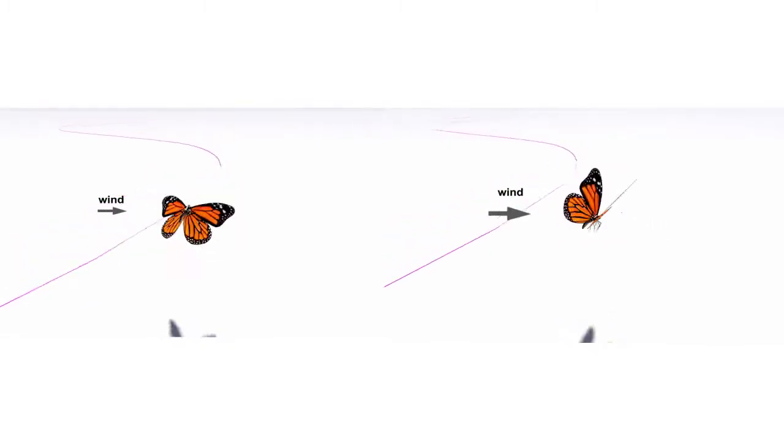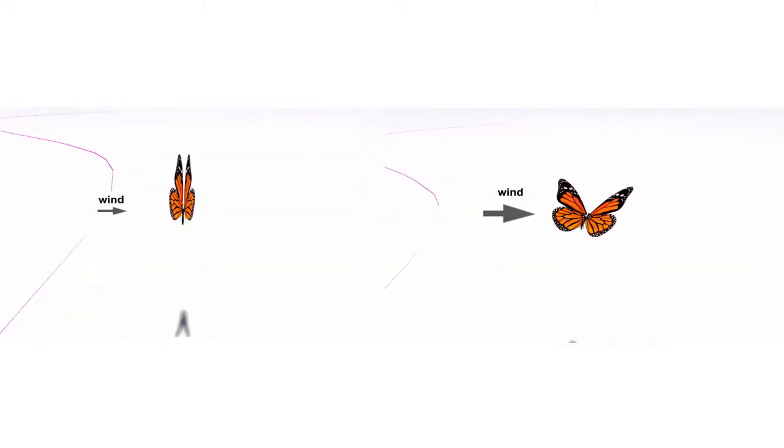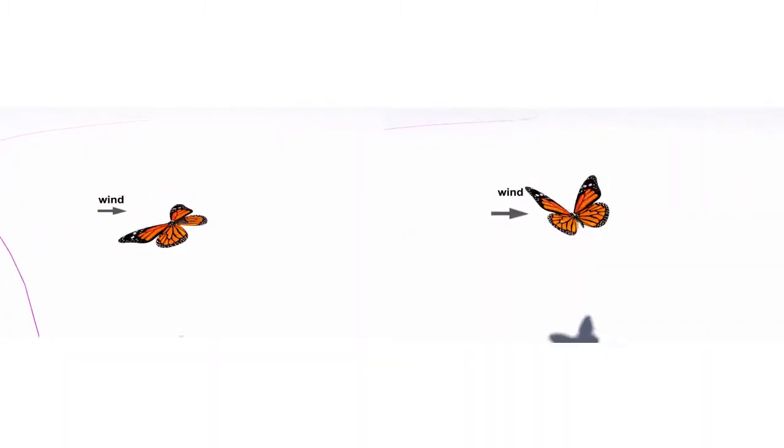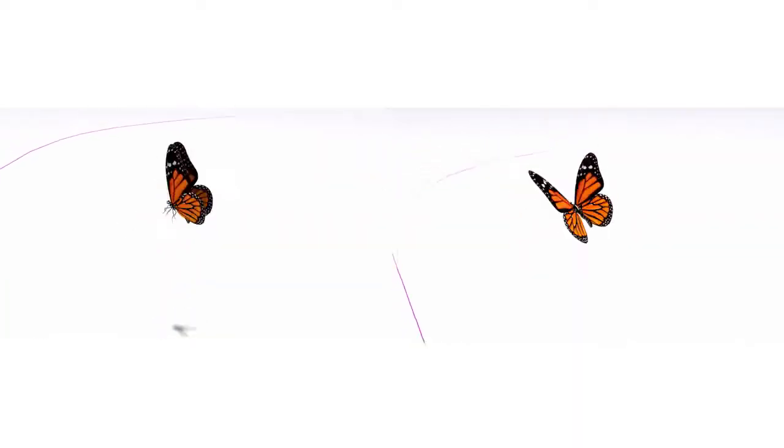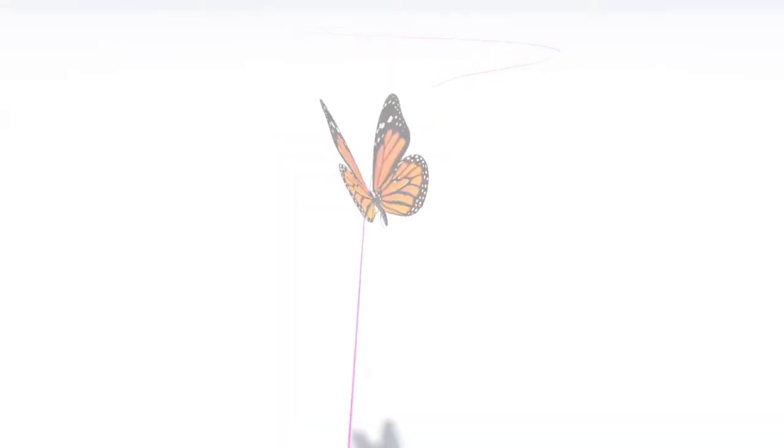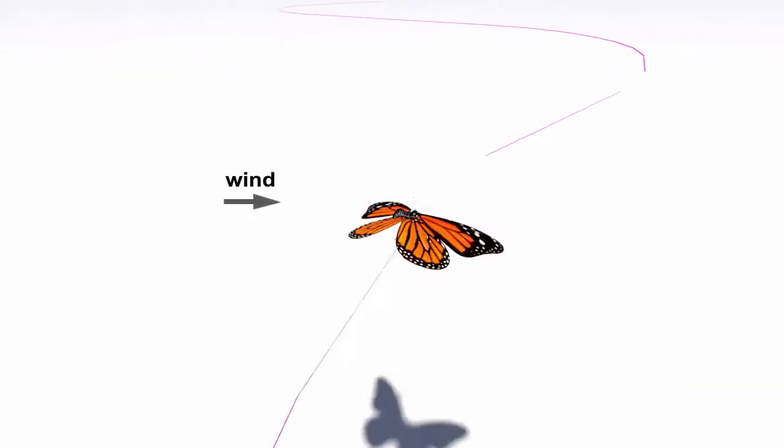Our model can also handle the influence of various external forces on the butterfly flying, such as wind. The butterfly attempts to recover a stable flight whenever it is influenced by external forces. When the wind disappears, the butterfly gradually recovers its normal flight state.